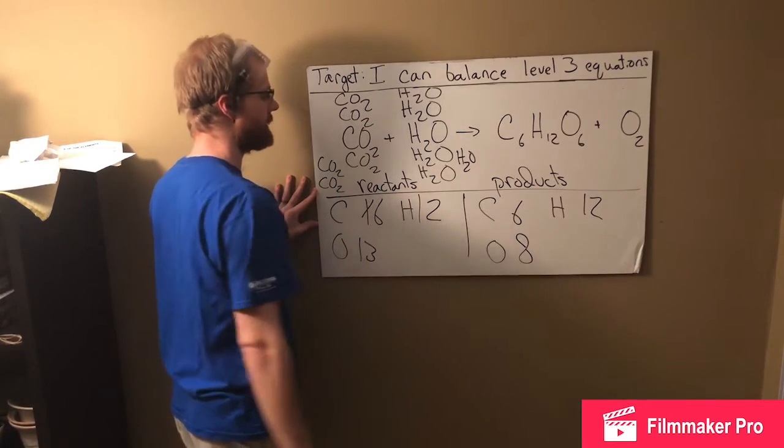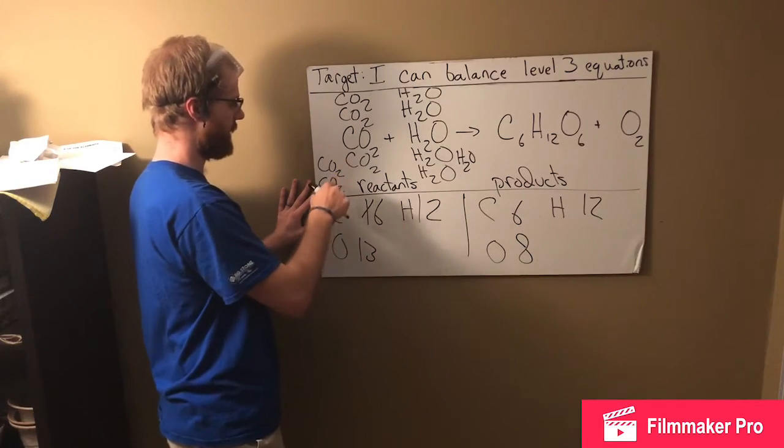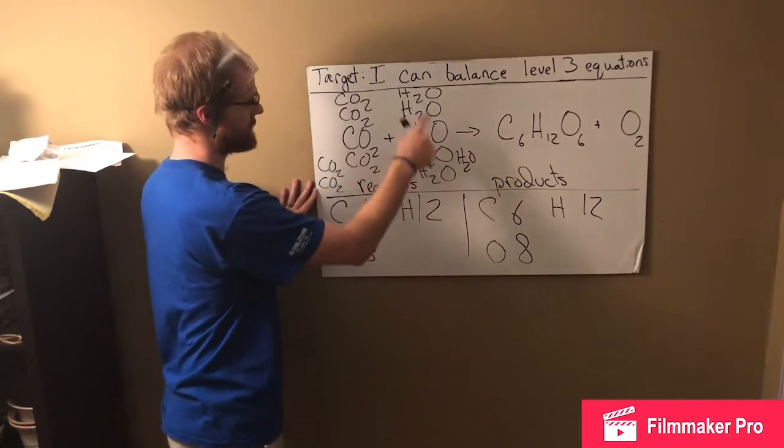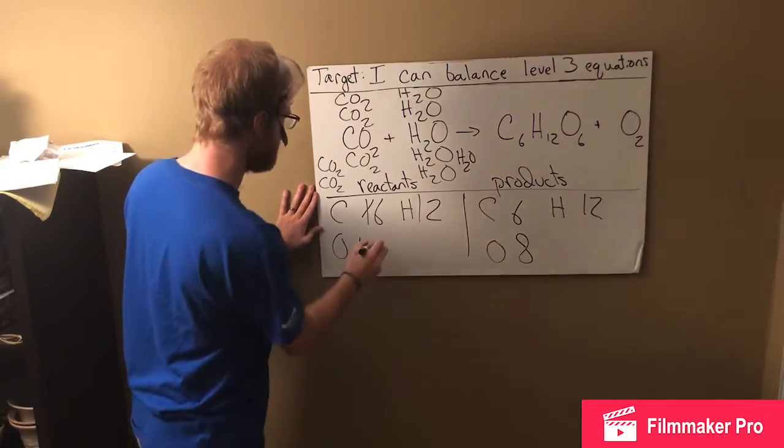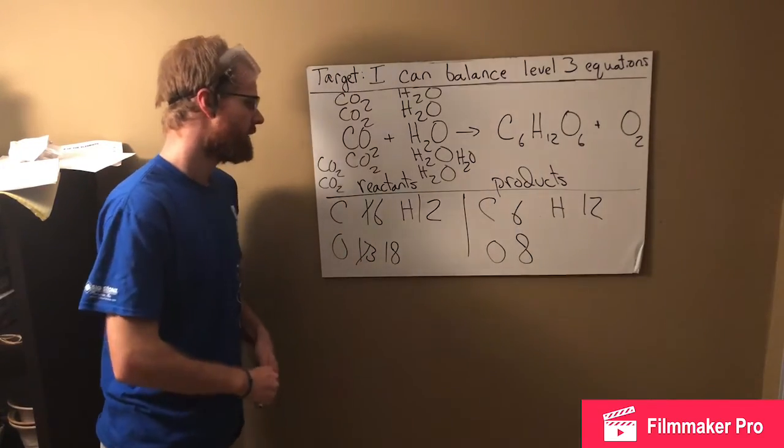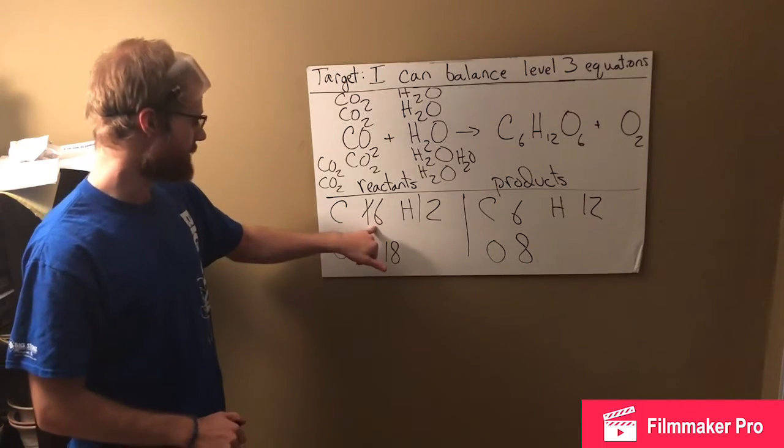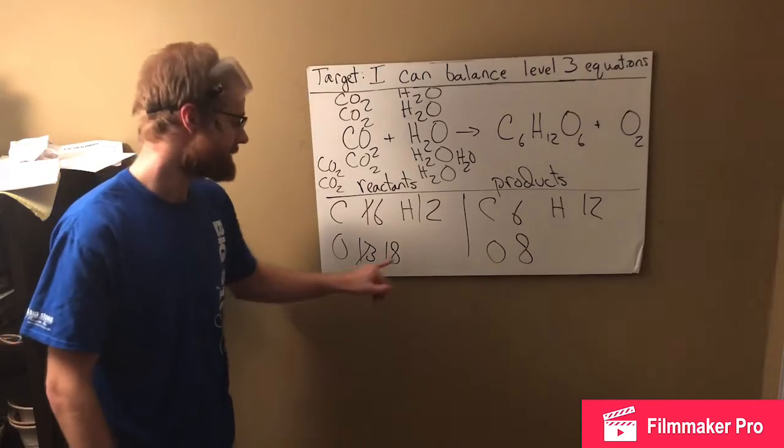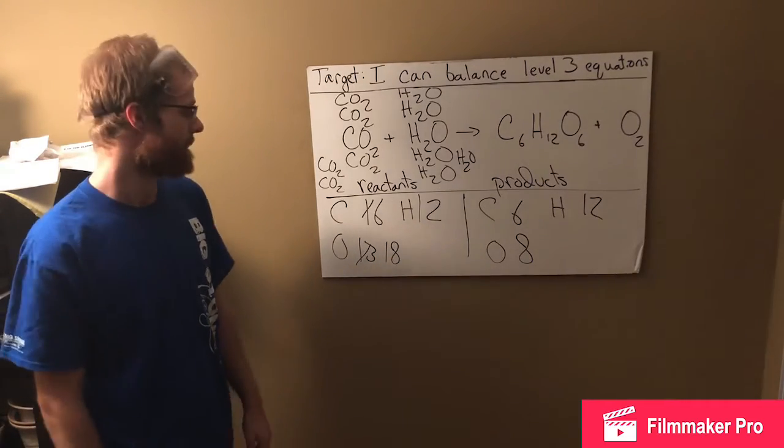All right. So we've got 12 hydrogen now and we've got 18 oxygen. I think that's right. Yeah. Good. All right. So now our carbon is balanced. Now our hydrogen is balanced. We just need to balance the oxygen.